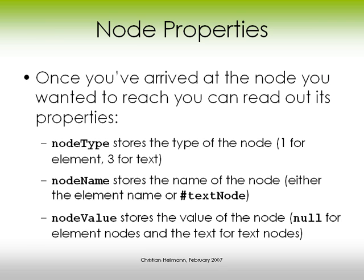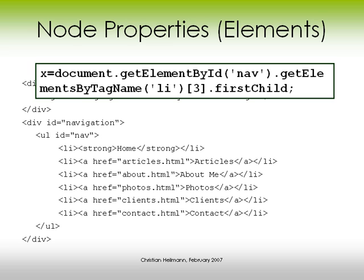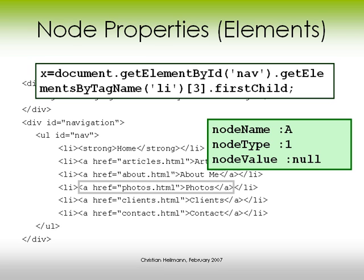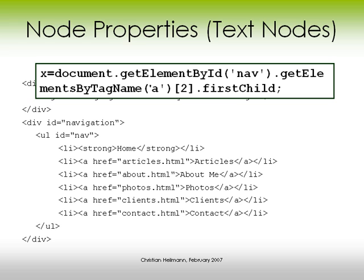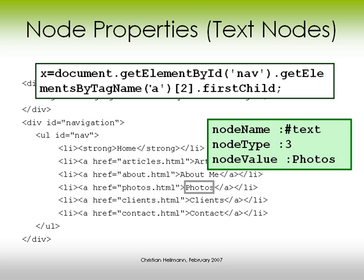Once you've arrived at the node you wanted, you can read out its properties. nodeType gives you the type — element nodes are number 1, text nodes are number 3. nodeName gives you the name of the node, or '#text' for text nodes. nodeValue is either null or the actual text of a text node. In our example, the link element has nodeName 'A' (uppercase, because browsers report them uppercase), nodeType 1, and nodeValue null. For text nodes, nodeName is '#text', nodeType is 3, and nodeValue is 'photos'.